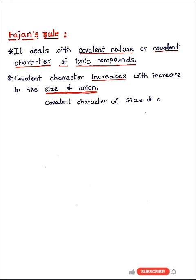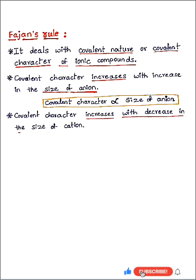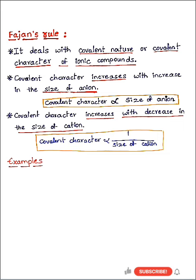This rule also says that covalent character increases with decrease in the size of cation, which can be written as: covalent character is inversely proportional to size of cation. Let's take examples to understand Fajan's rule.